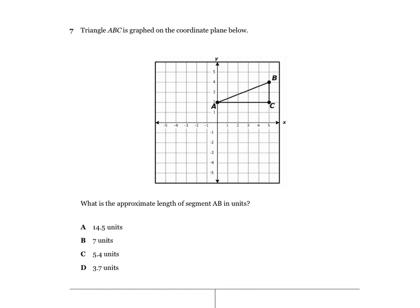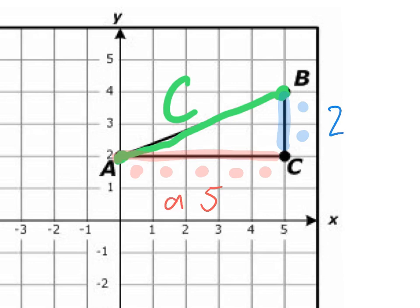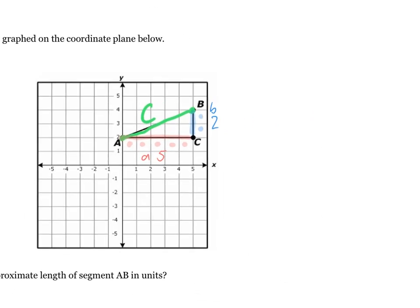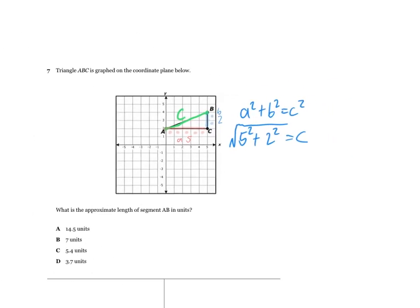On number 7, triangle ABC is graphed on the coordinate plane and we need the approximate length of segment AB — that's our side c. I count the vertical side as 5 units and the horizontal side as 2 units. Calling them a and b, we use a squared plus b squared equals c squared, plug in those values, and take the square root to get the length of c. Work that out on your own.